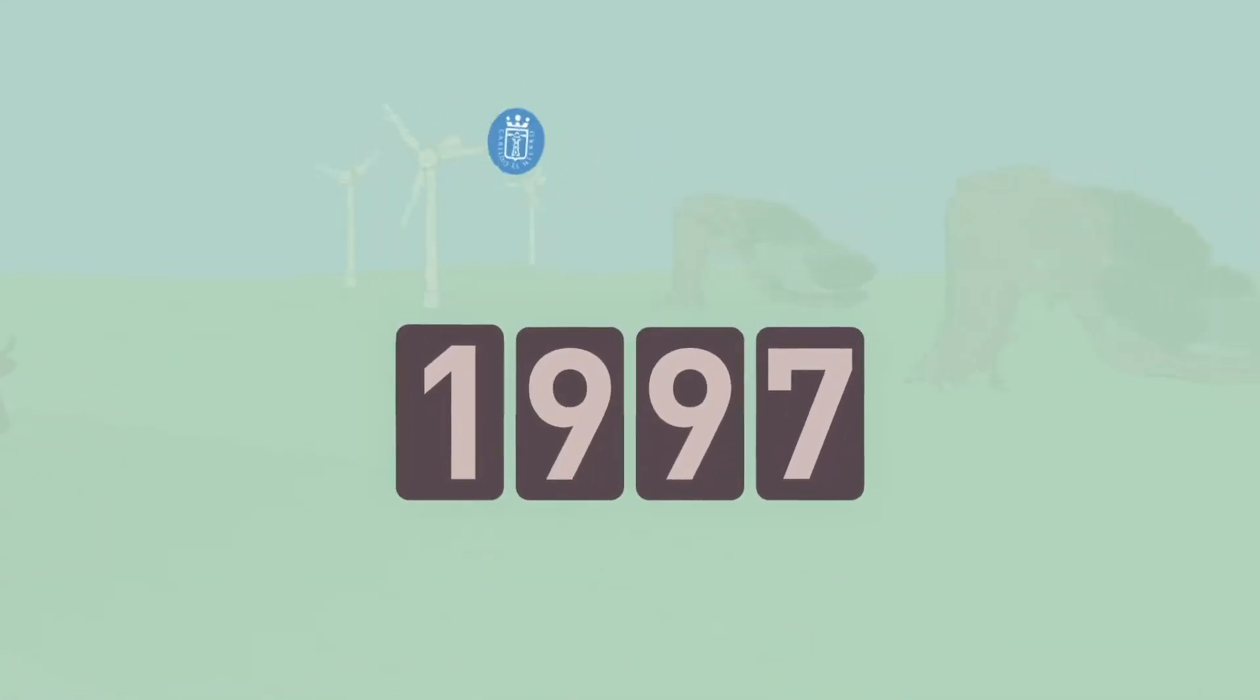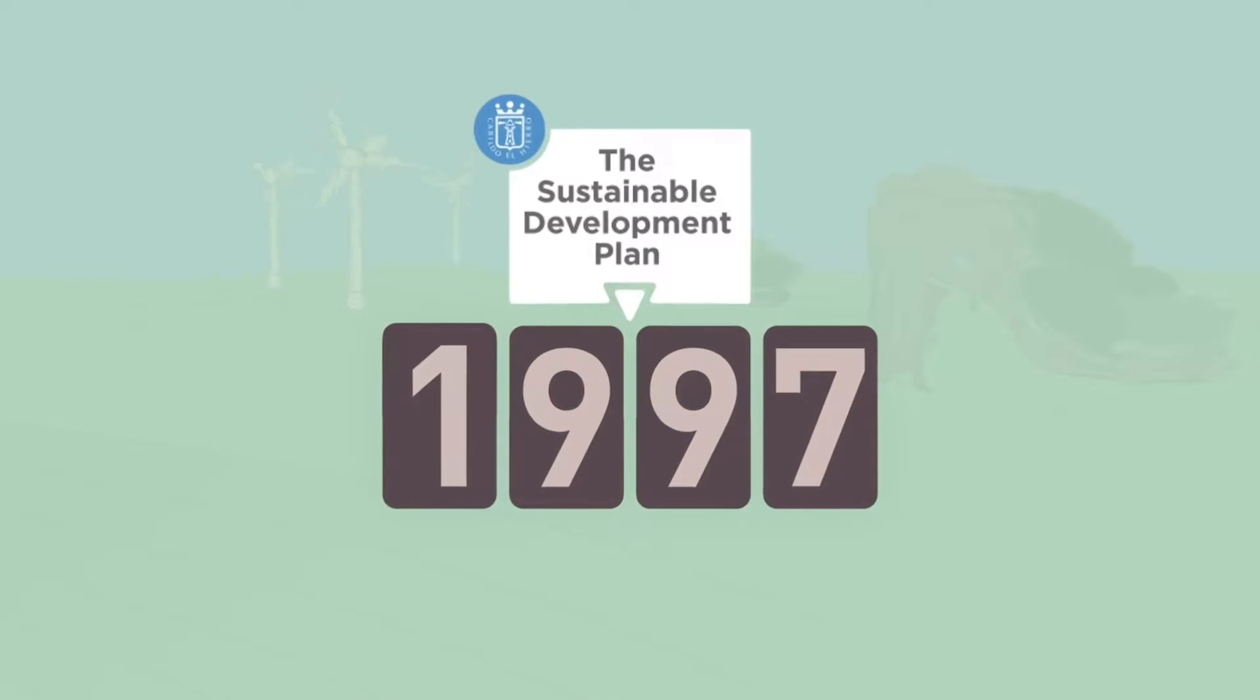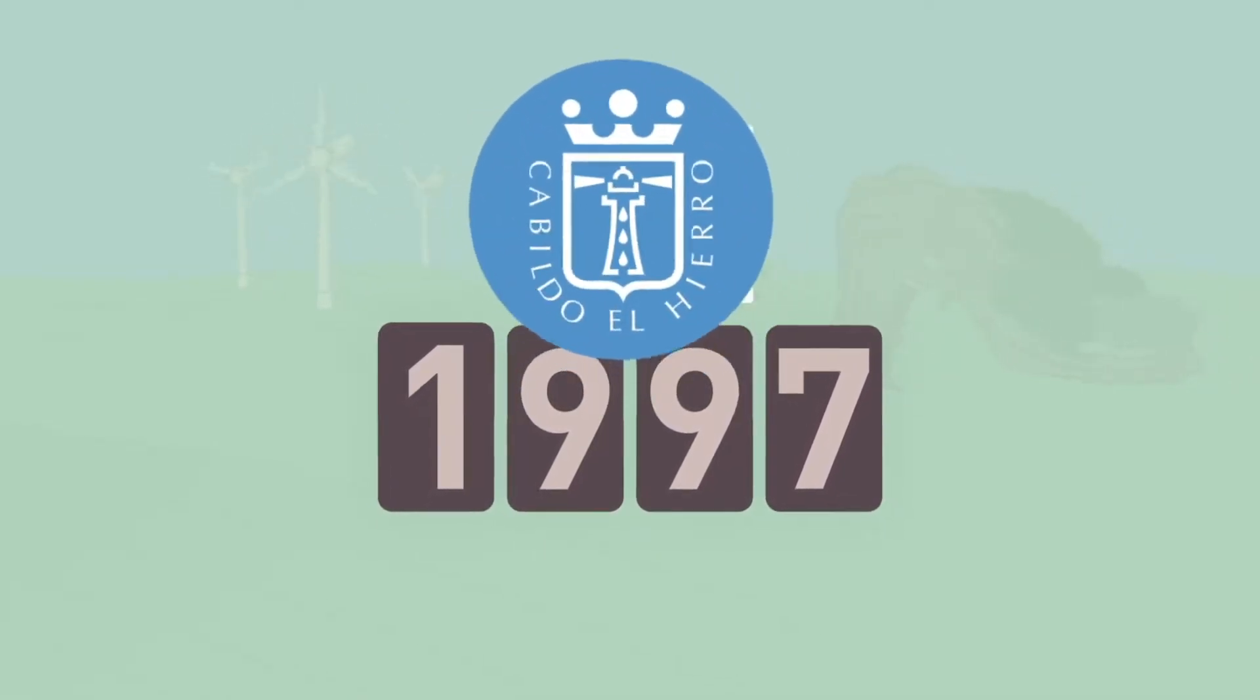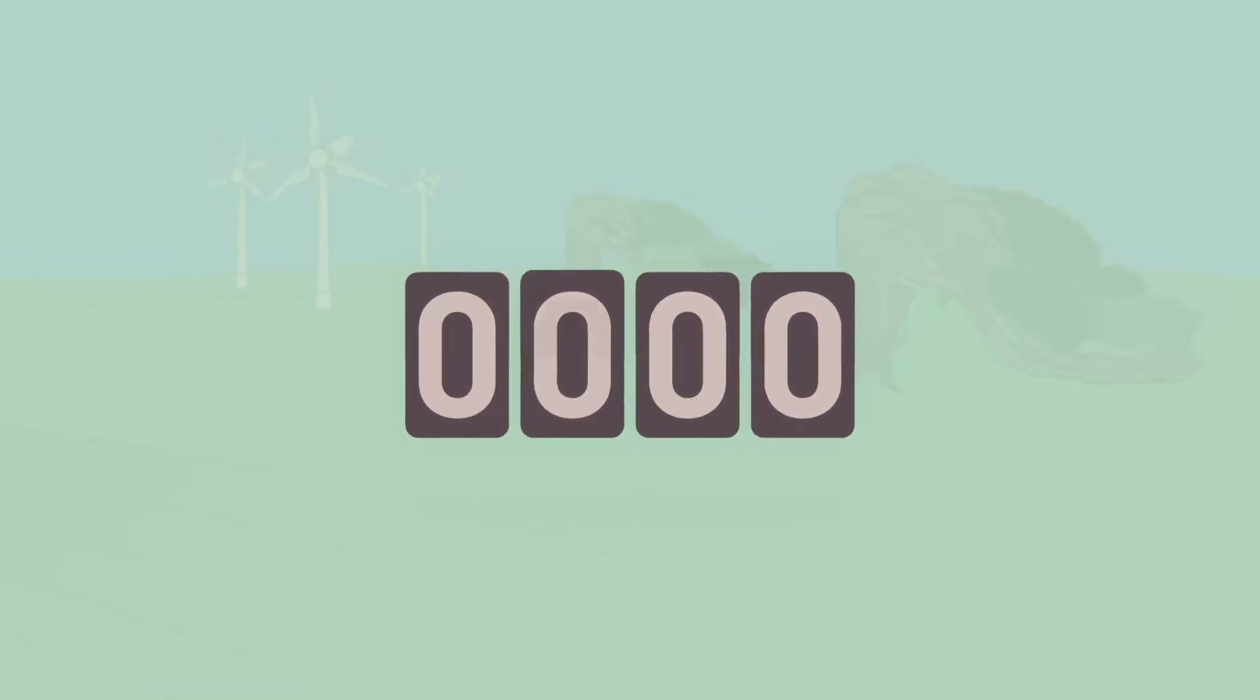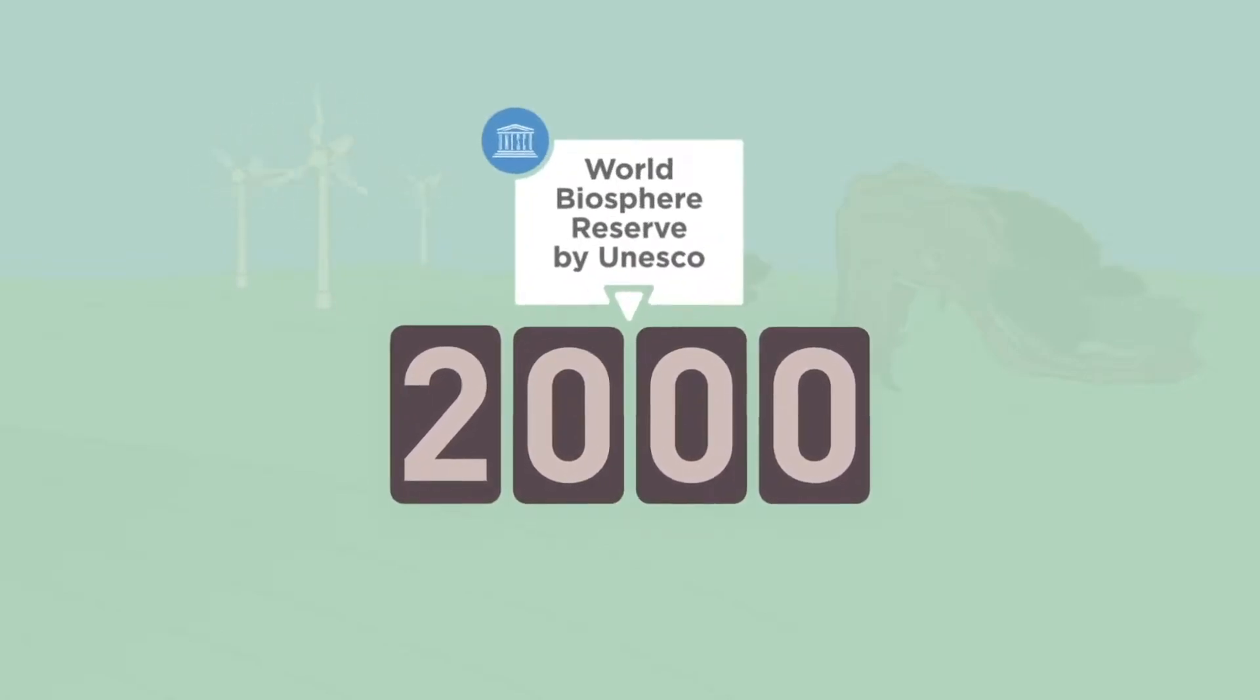In 1997, the island began the journey to becoming the world's first energy-sufficient island. The Sustainable Development Plan, which was approved by the Cabildo de El Hierro, started the Energy Self-Sufficient Project.